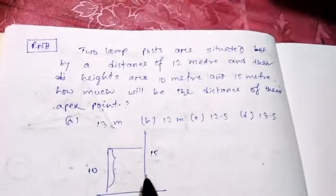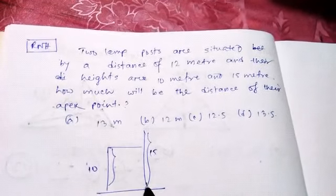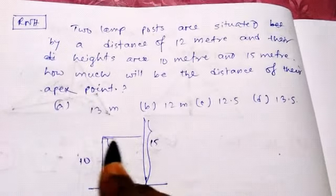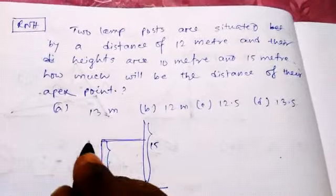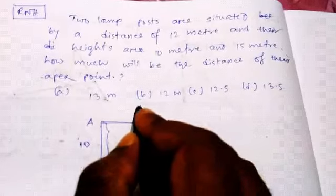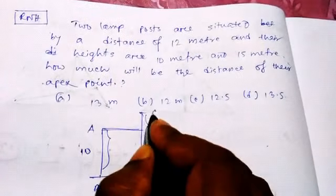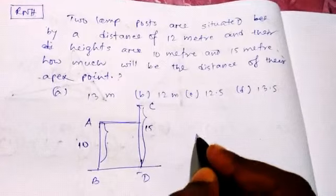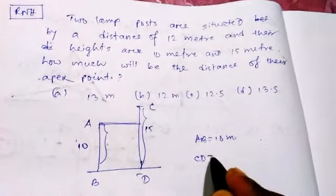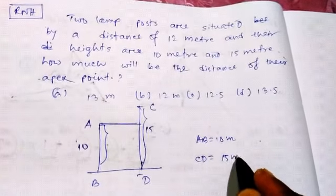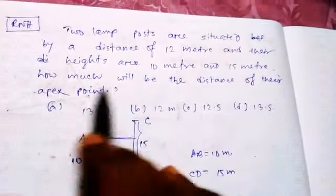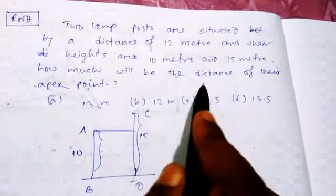Okay, this is 10 meters and this is 15 meters. One is AB and the other is CD. AB is 10 meters and CD is 15 meters. So here, AB equals 10 meters and CD equals 15 meters. Clear.